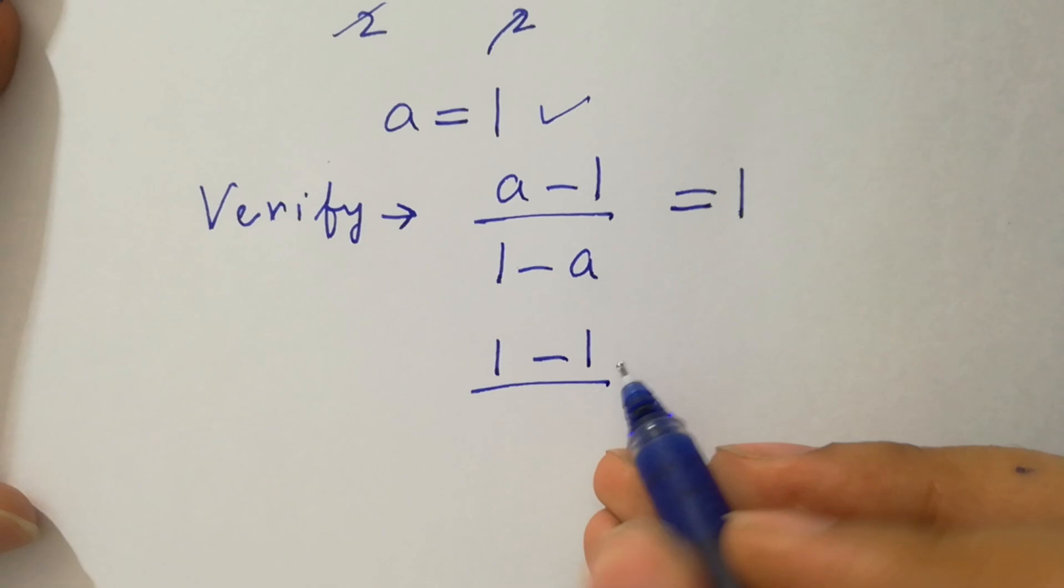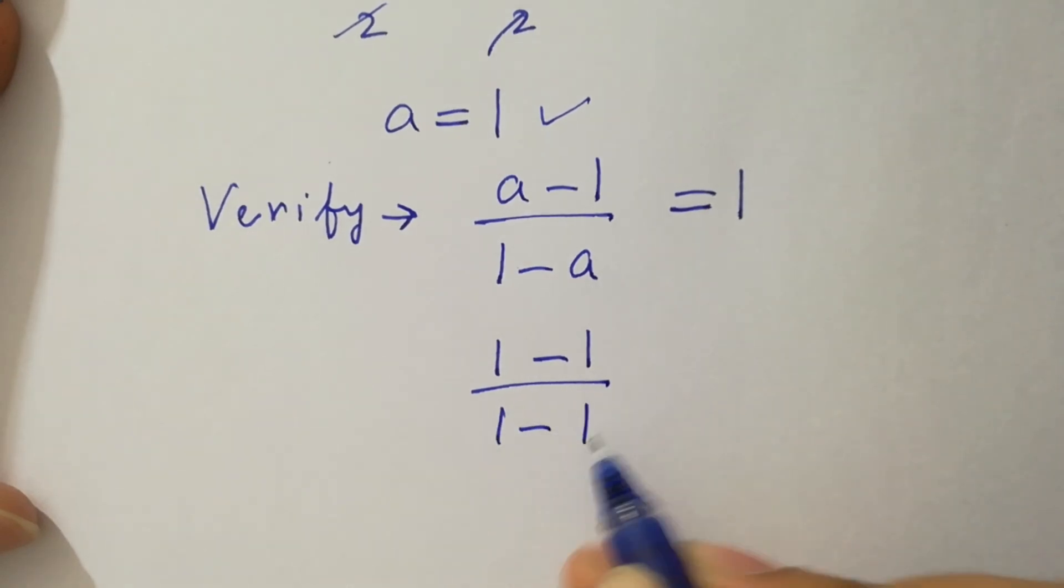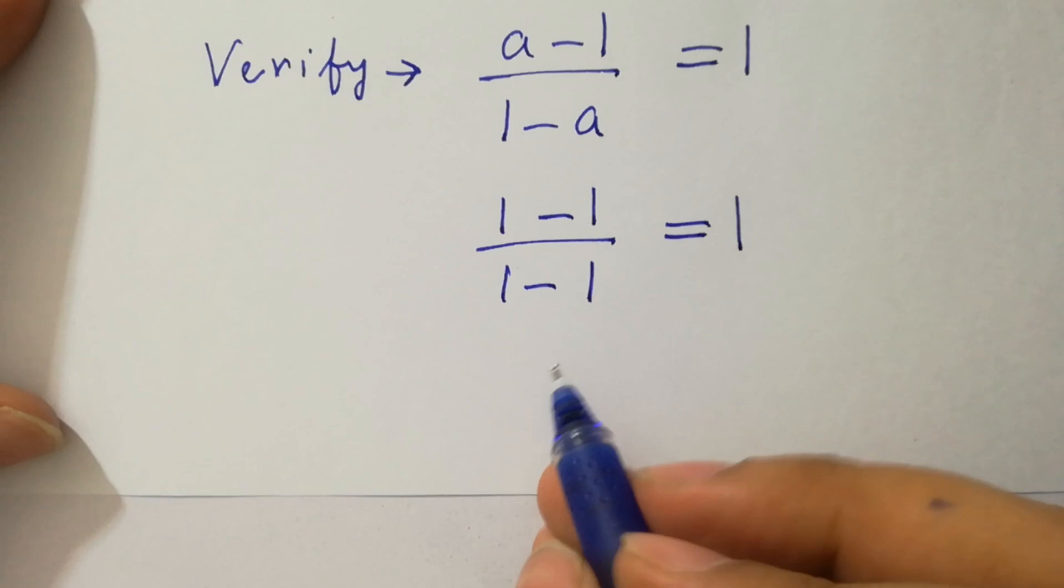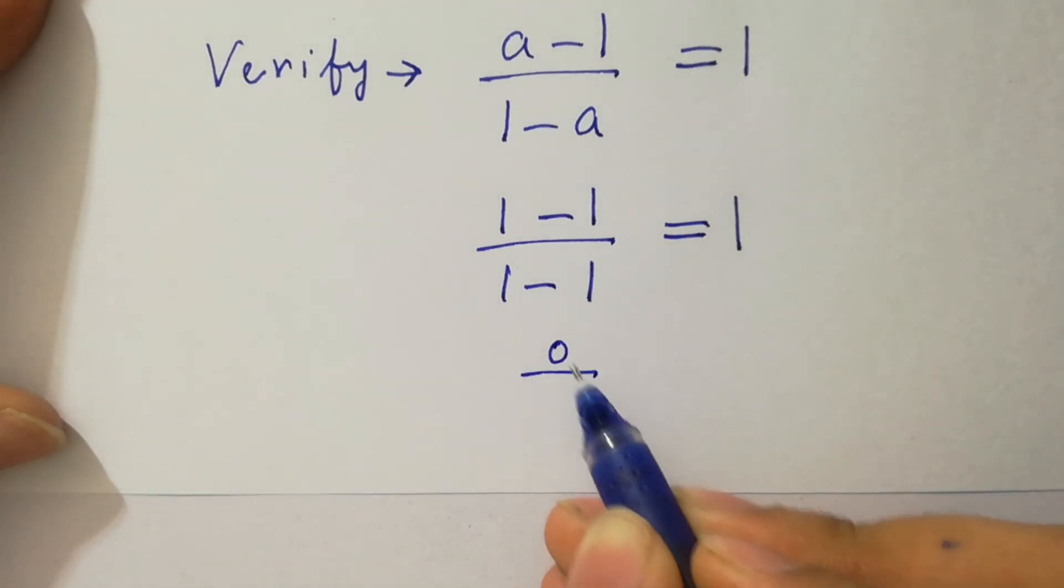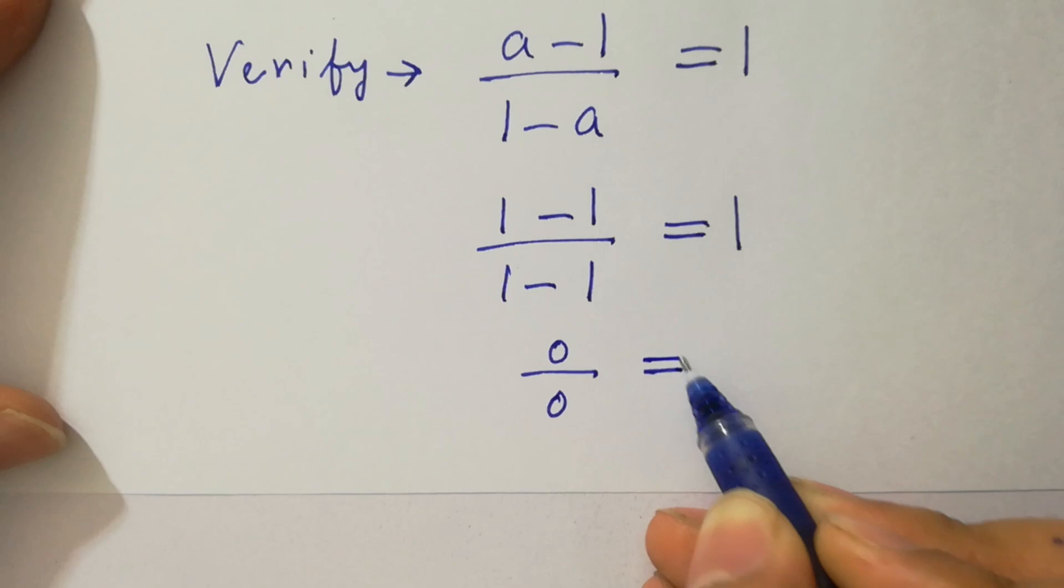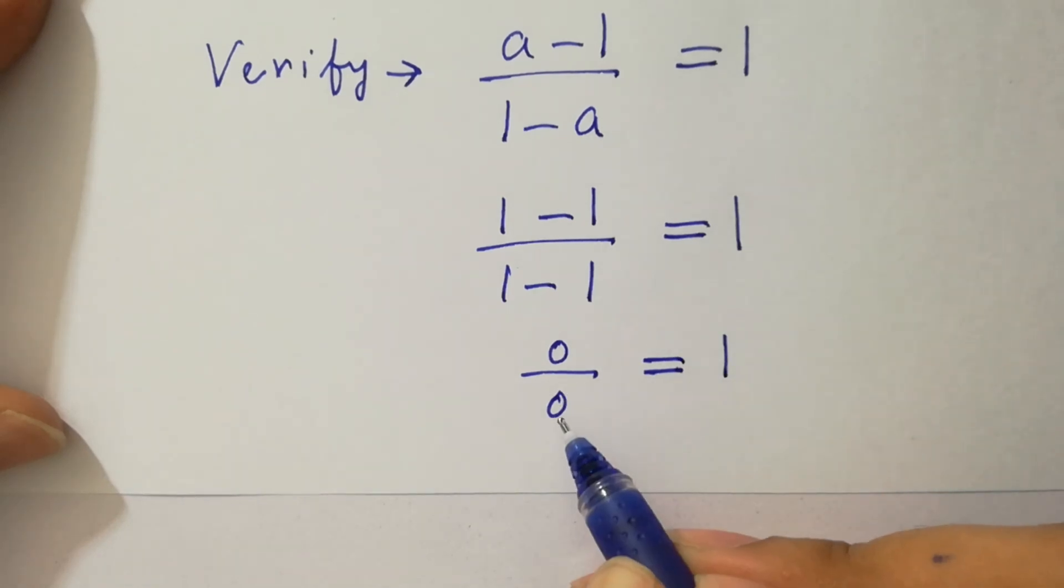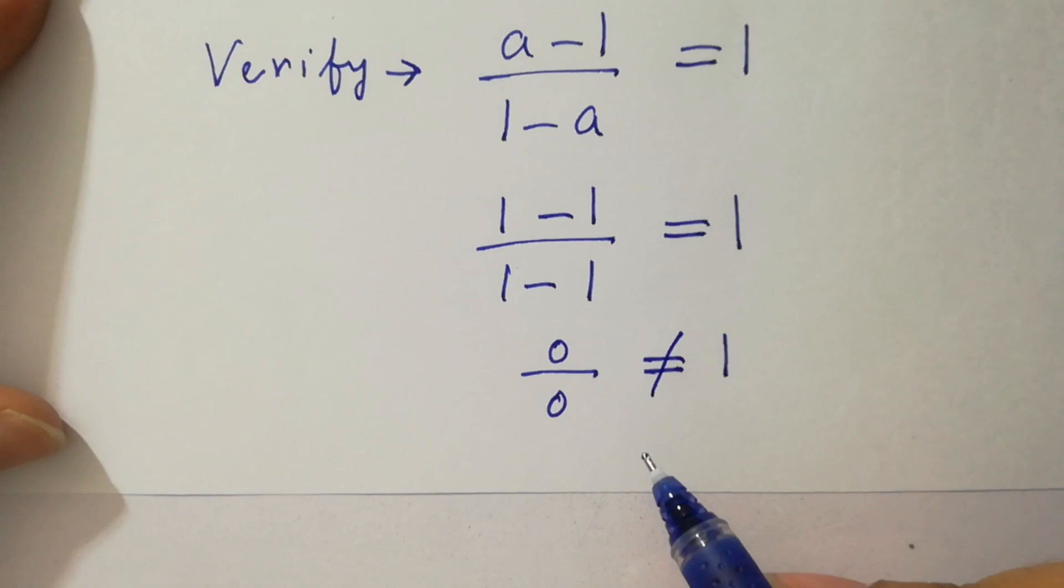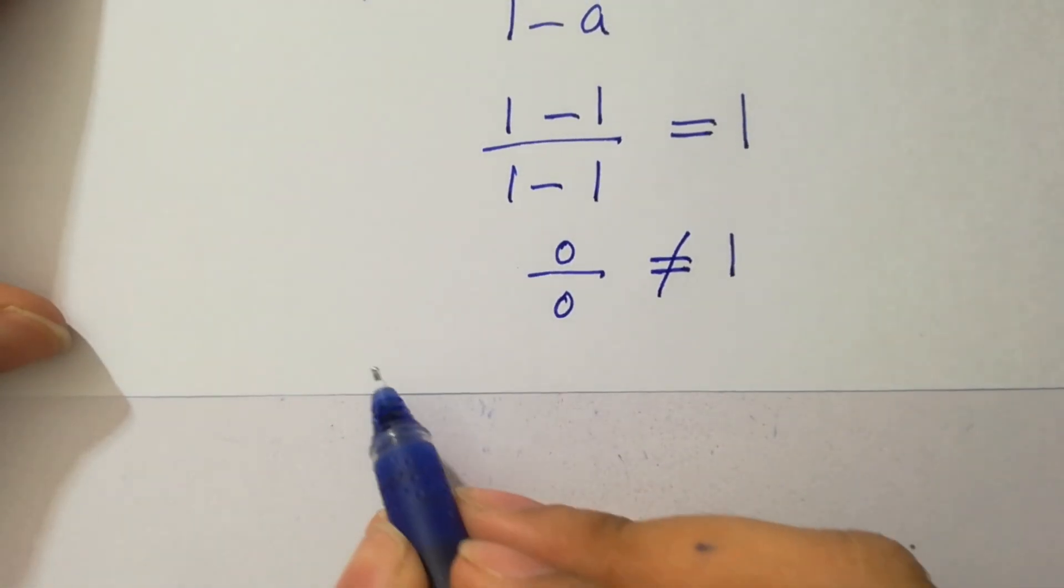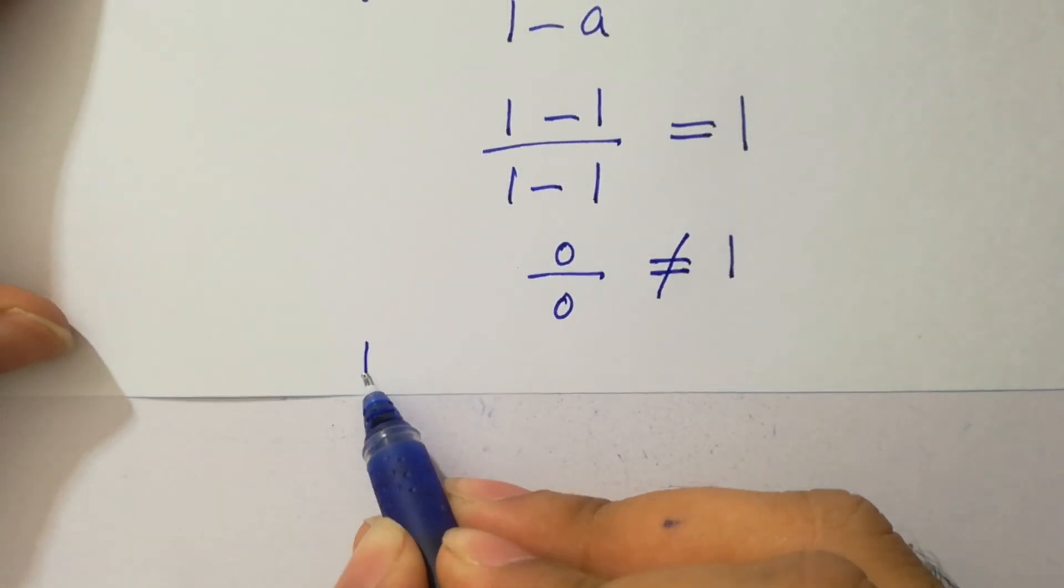1 minus 1 is 0 over 1 minus 1 is 0, equal to 1. Where 0 over 0, which is an undefined form, does not equal to 1.